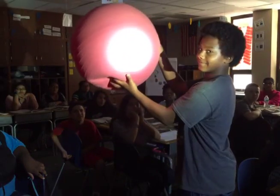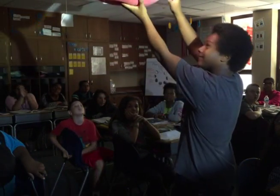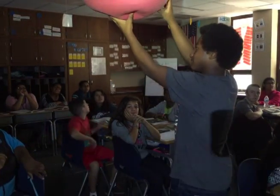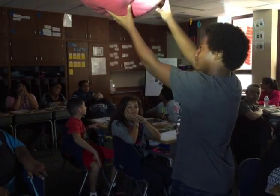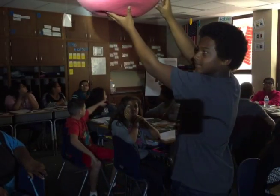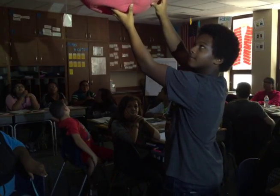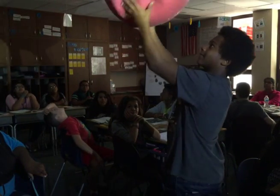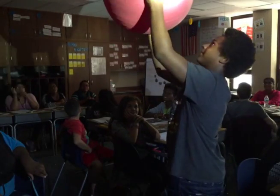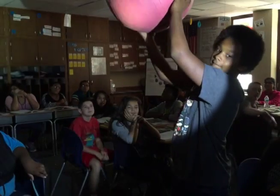Hold up the earth model. I'm the sun — can you guys see what's behind it? That's the shadow. As the earth moves, we have a shadow. He's rotating it, and we still have a shadow. Very good — let's add one more thing.